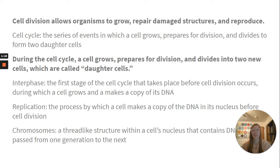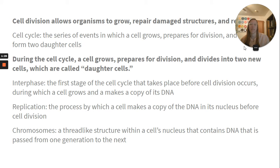During the cell cycle, a cell grows, prepares for division, and divides into two new cells called daughter cells. Interphase is the first stage of the cell cycle that takes place before cell division occurs, during which a cell grows and makes a copy of its DNA. Replication is the process by which a cell makes a copy of the DNA in its nucleus before cell division. Chromosomes are thread-like structures within a cell's nucleus that contain DNA passed from one generation to the next.